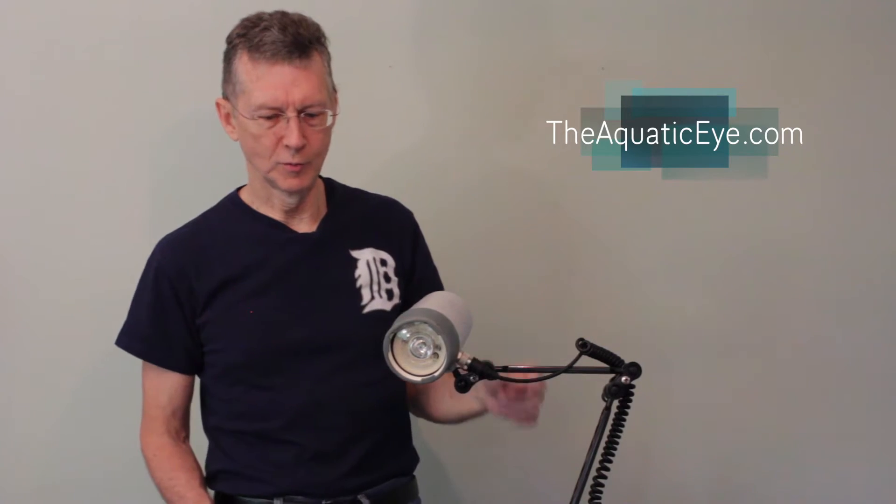Thanks for tuning in. This is part three on strobes: common problems with strobes and solutions. One of the problems we have to recall with a strobe is limited penetration underwater. They probably only penetrate two to three to four feet at the most, so you have to be close to your subject. The rate that the light drops out is proportional to the square of the distance.